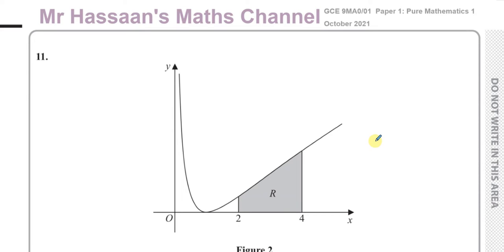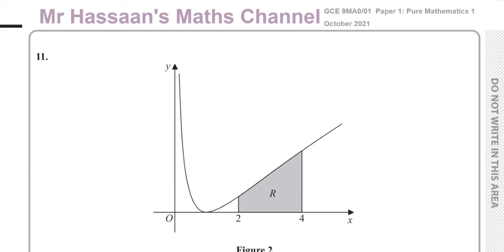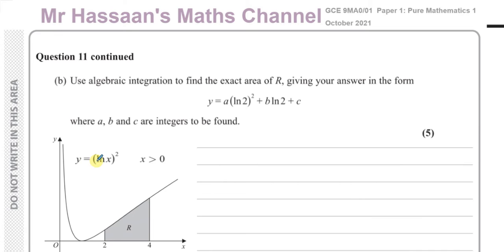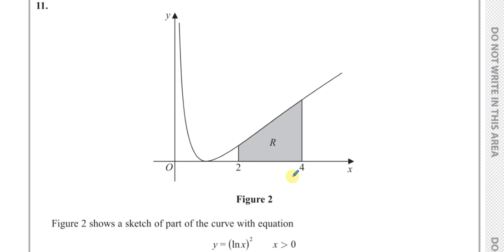Part A of this question is something you might not have studied since P2, because in the old C4 and C34 syllabus the trapezium rule was part of it. It was in P2, repeated in C3 and C4. Since they started the new P4 specification you haven't found questions on the trapezium rule. However, it is possible for them to give you questions from the P2 syllabus in P3 and P4. Part B is the question I was really interested in — how to integrate this expression and find the exact area of R — but I'll do Part A as well as a revision of the trapezium rule.